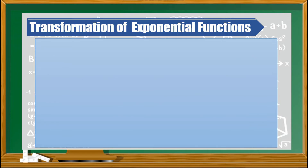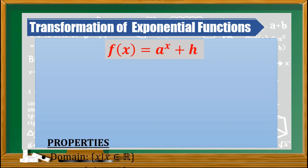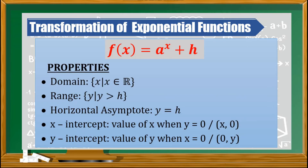Regarding the transformation of an exponential function, it is given by f of x is equal to a raised to x plus h. As you can see in this given function, we have the presence of h, and using this we can now have the general properties. As for the domain, it is always the set of real numbers, meaning we can use any real number for the value of x.